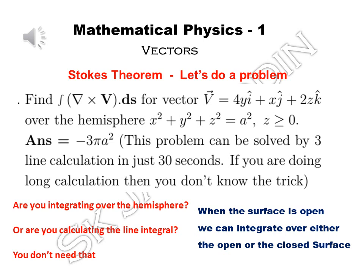You just apply Stokes theorem and calculate the line integral of this vector over the boundary — the base circle of the hemisphere. So you have two options: find the curl and do the surface integral over the hemisphere, or directly take the vector V and compute V · dr over the base circle x² + y² = a². Either way, both methods are lengthy — and you don't need either of them.